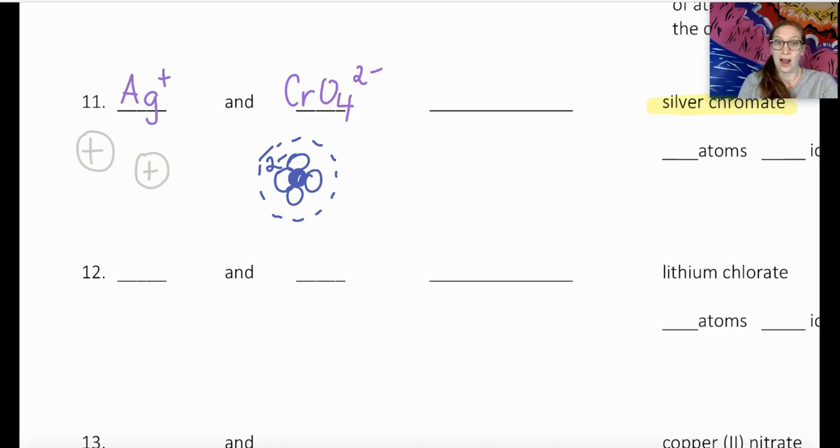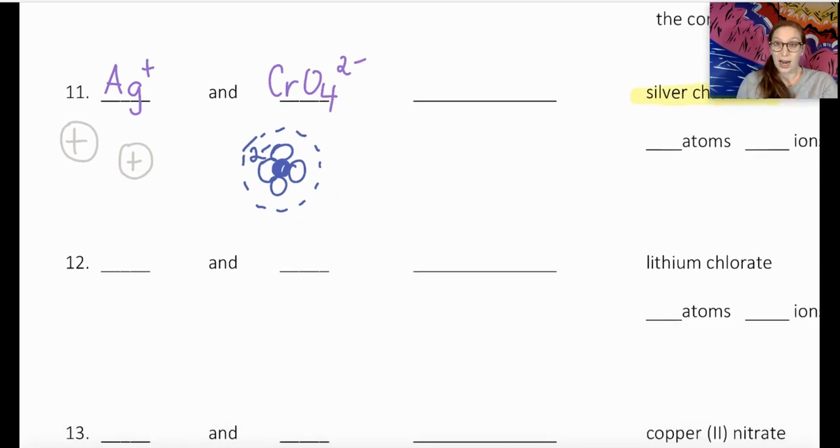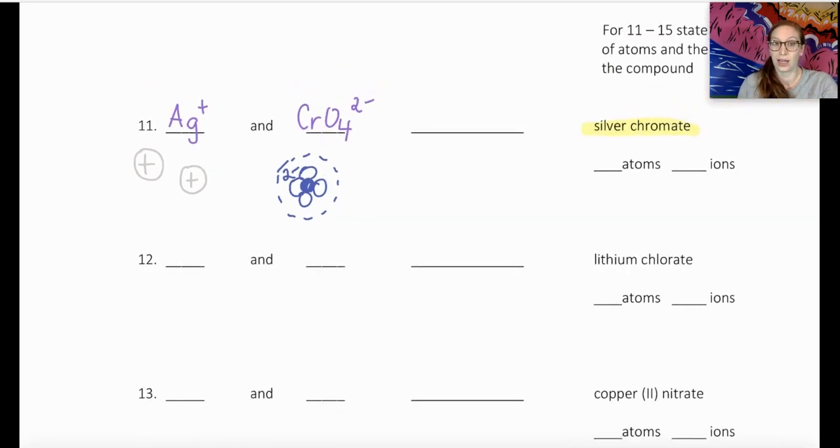There's two things that we can do right now that we know that this is going to give us a neutral compound. The first thing I want to do is I actually want to count up the number of ions that I have, and we're going to put that over here on the right-hand side. So notice, as I count these, I'm going to highlight them. I have a total of two silver ions and one chromate ion, so that is three total ions that I have.